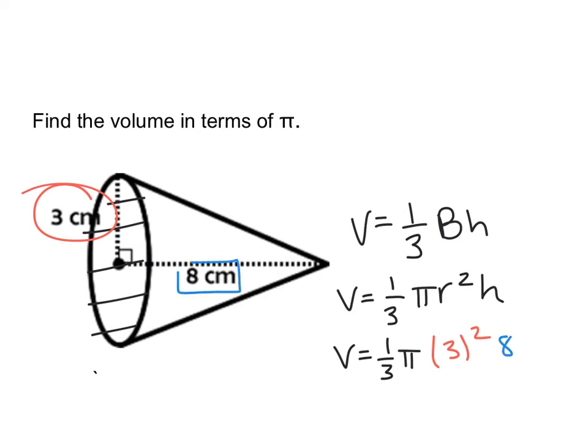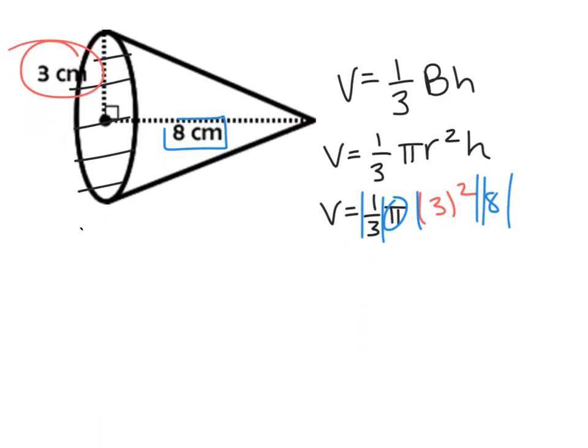So 3 squared, and now I use my height of 8. I can type this right into my calculator. Remember, I don't type π, I just type one-third, 3 squared times 8. After typing that in my calculator, I get 24. V equals 24π, and my units are centimeters cubed. That is your final answer.